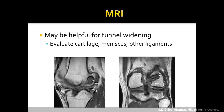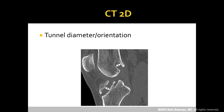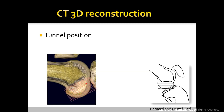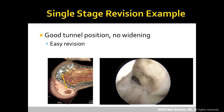MRI may be helpful for tunnel widening but is really more useful to evaluate the rest of the joint — cartilage, meniscus, and the other ligaments. 2D CT is very helpful particularly for tunnel diameter and orientation. 3D reconstruction is extremely useful for tunnel positioning; here we can see good tunnel positioning, no widening, the tibial tunnel was posterior, and there's good bone stock.